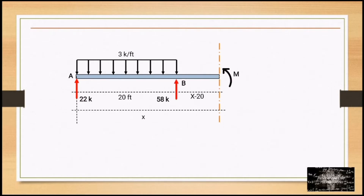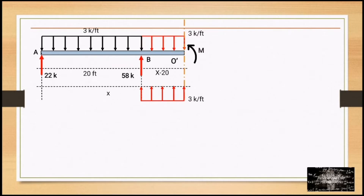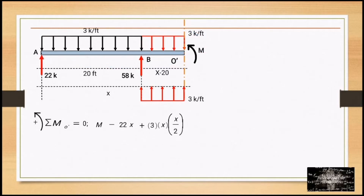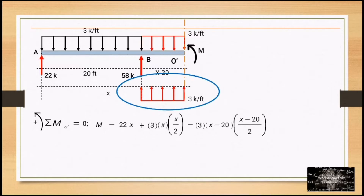We have the moment equation. The uniform load needs to be extended for boundary conditions, then we subtract to keep equilibrium. Using summation of moments at point O' equal to zero, considering counterclockwise as positive: M minus 22X plus 3·X·(X/2) minus 3·(X−20)·(X−20)/2 minus 58·(X−20) equals zero.